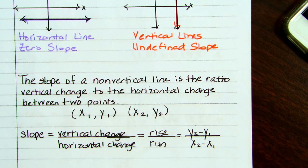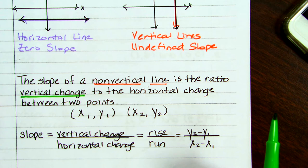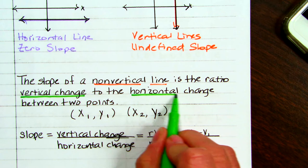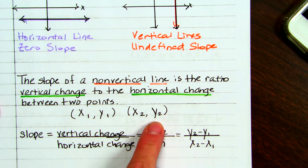The slope of a non-vertical line — notice we're not even going to talk about the slope of a vertical line because it has an undefined slope — is the ratio of vertical change to horizontal change. The vertical change is your y-axis (going up and down) to your horizontal change, which is your x-axis (going left to right), between two points. We label those points generically x1, y1 and x2, y2.